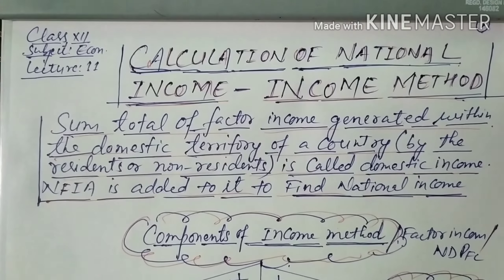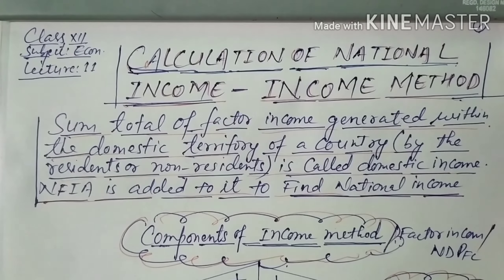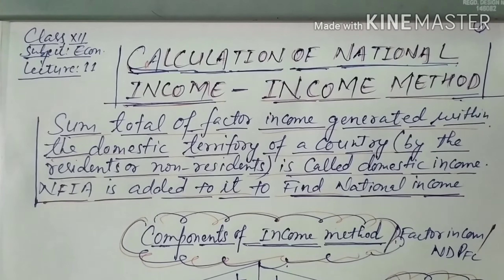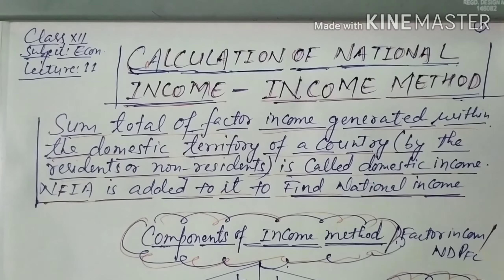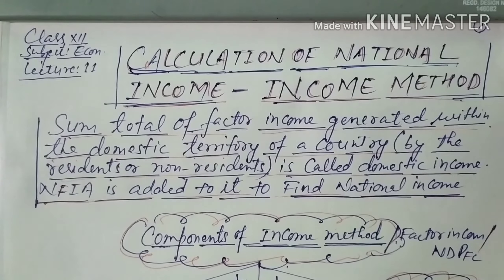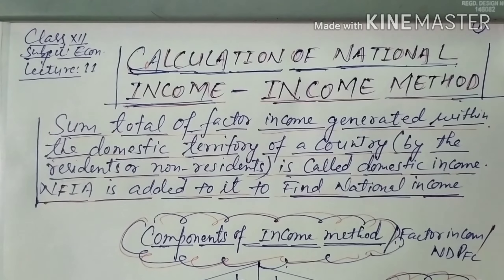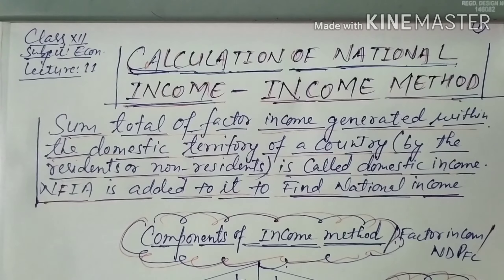Hello students and welcome once again. Today's topic is income method — calculation of national income by income method. We have already discussed the value-added method of calculating national income. The product method and expenditure method are both calculated at market price, whereas the income method is the only method calculated at factor cost. By this method we get domestic income, that is NDPFC — net domestic product at factor price.